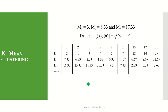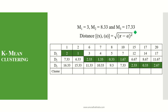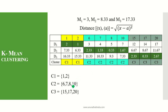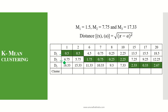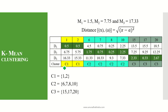With the new means, we calculate the distances again using D1=3, D2=8.33, and D3=17.33. The minimum values are highlighted and we see that item 6, which was in cluster C1, has now moved to cluster C2. As there is a movement, we recalculate the mean. The new means are M1=1.5, M2=7.75, and M3=17.33. With these new means, the distance matrix is created and the clusters remain the same — there is no movement of item sets between the clusters, so these are the final clusters.